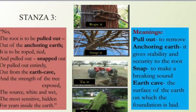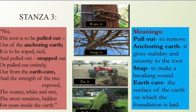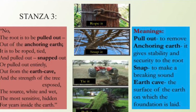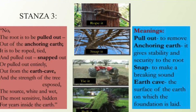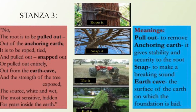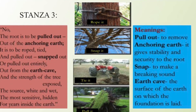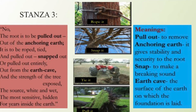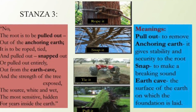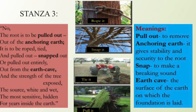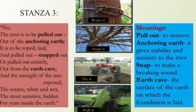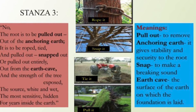The root is to be pulled out, out of the anchoring earth. It is to be roped, tied, and pulled out, snapped out, or pulled out entirely out from the earth cave. And the strength of the tree exposed — the source, white and wet, the most sensitive, hidden for years inside the earth.